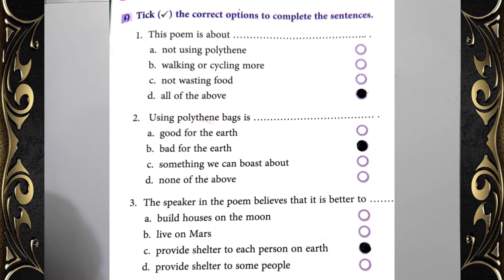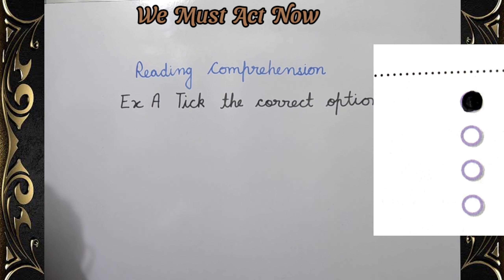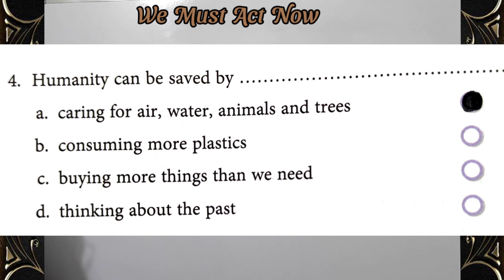Number three: The speaker in the poem believes that it is better to — answer is C, provide shelter to each person on earth. Number four: Humanity can be saved by — correct option is A, caring for air, water, animals and trees.